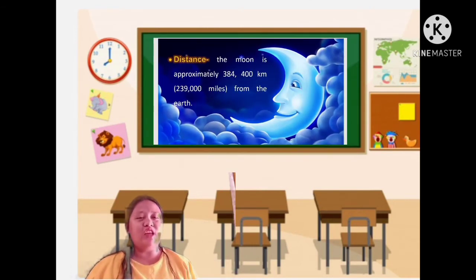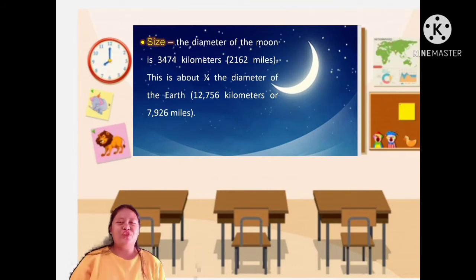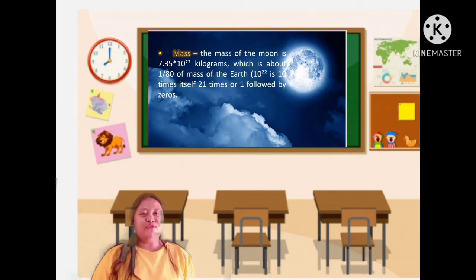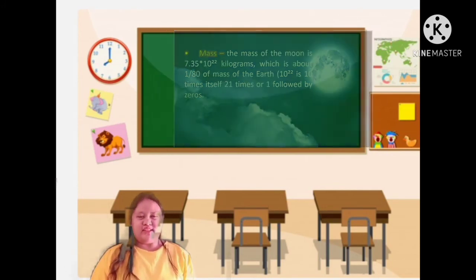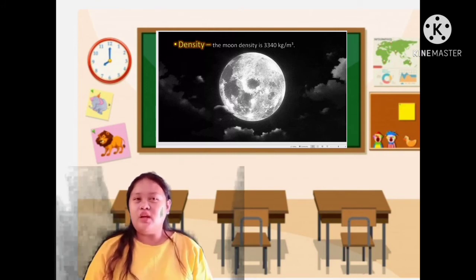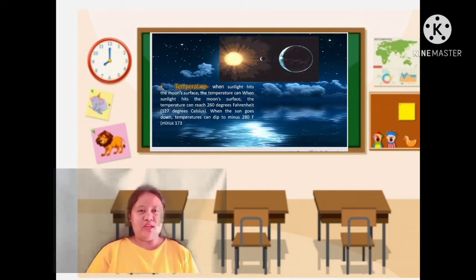Distance: The distance of the moon to the earth is approximately 384,000 kilometers or 239,000 miles from the earth. The size of the moon is the diameter of 3,474 kilometers or one-fourth diameters of the earth. Mass: The mass of the moon is 7.35 times 10 to the power of 22 kilograms. Density: The density of the moon is 3,342 kilograms per meter cube. The temperature of the moon depends on the reflection of the sunlight to the moon's surface. It goes to 260 degrees Fahrenheit or 127 degrees Celsius, but when the sun goes down it will be negative 280 degrees Fahrenheit.